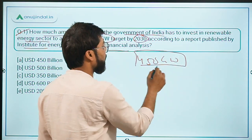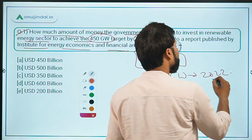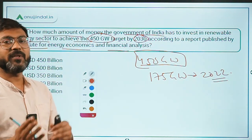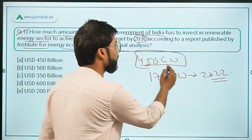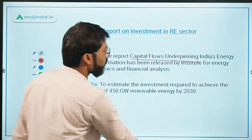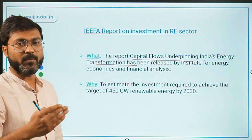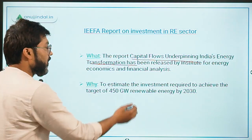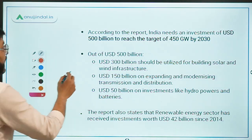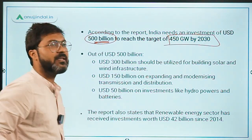We know the Government of India has set a target of 450 gigawatt of renewable energy by 2030 and 175 gigawatt by 2022. The report, titled 'Capital Flows Underpinning India's Energy Transformation', released by the Institute for Energy Economics and Financial Analysis, states that India requires 500 billion dollars to reach the 450 gigawatt target by 2030.